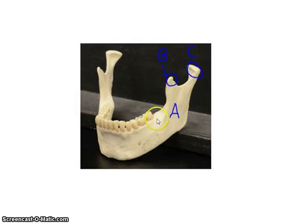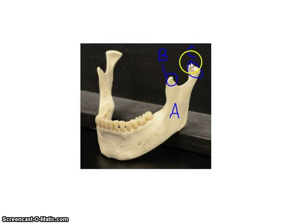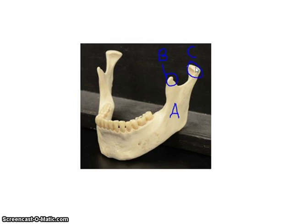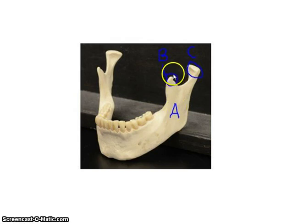Now we're looking at the mandible. This is the mental foramina of the mandible. We also have the alveoli. We then have the coronoid process and the condylar process. This condylar process articulates with the mandibular fossa of the temporal bone and forms the temporomandibular joint, or TMJ. The whole bone is the mandible, and its surface markings include the mental foramina, alveoli, ramus, coronoid process, and condylar process.